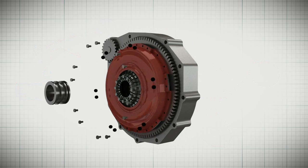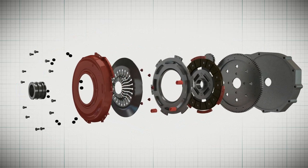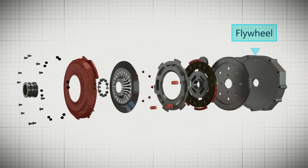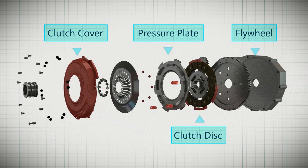Let us have a closer view of the clutch. It consists of the flywheel, clutch disc, pressure plate, clutch cover, and hub.